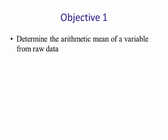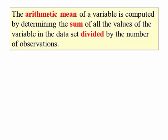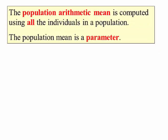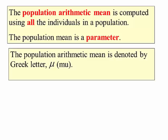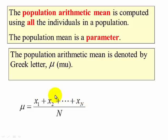Lesson objective number one. The arithmetic mean of a variable is computed by determining the sum of all the values of the variable in a data set divided by the number of observations. The population mean is computed by using all the individuals in a population. The population mean is a parameter, denoted by the Greek letter mu. So mu is the sum of all the values in a population divided by how many values are in that population.